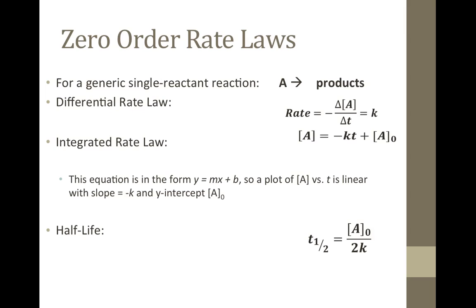Lastly, let's look at the zero order integrated rate law. The integrated form of the zero order rate law is the molar concentration of A equal to negative the rate constant times time plus the initial molar concentration of A. In this slope-intercept form, a plot of molar concentration of A versus time is linear, with a slope equal to negative K and a y-intercept equal to the initial molar concentration of A. This makes sense: if a reaction is zero order with respect to A, the rate is constant and doesn't depend on the concentration of A — the change in A concentration over time has a constant slope. The half-life for a zero order reaction does have a concentration dependence and is equal to the initial molar concentration of A over 2K.